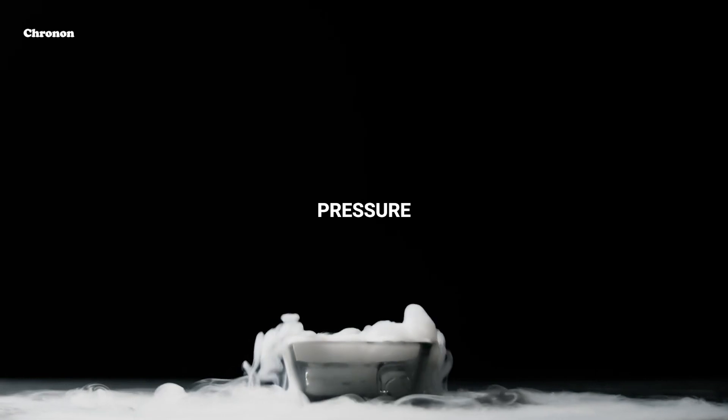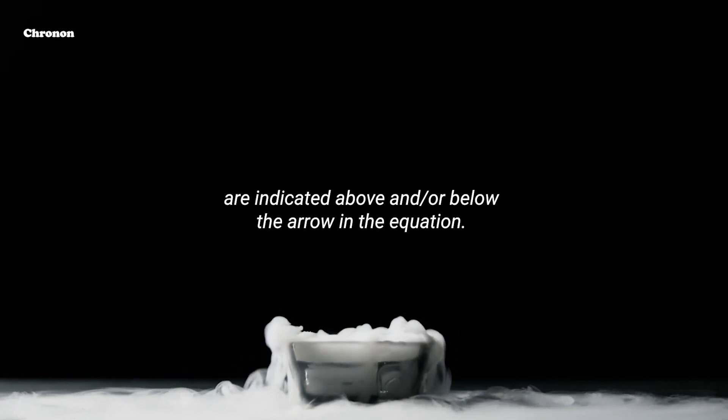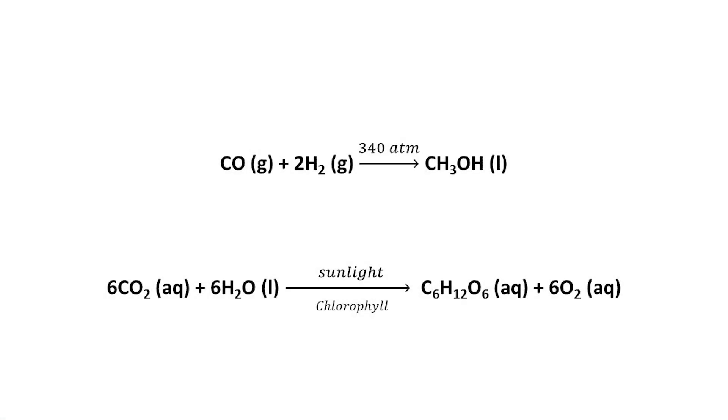Sometimes the reaction conditions such as temperature, pressure, catalyst etc. for the reaction are indicated above and or below the arrow in the equation. For example, in these chemical equations, we can see that in the first equation, atmospheric pressure is mentioned on the arrow to indicate that this reaction is carried out in the presence of 340 atmospheric pressure.